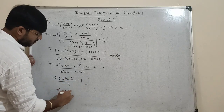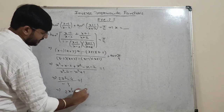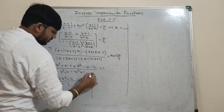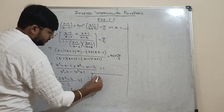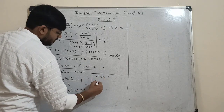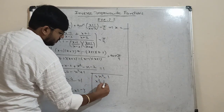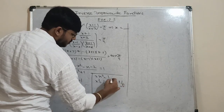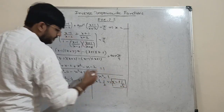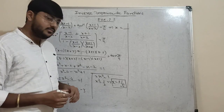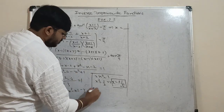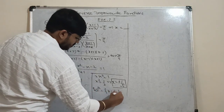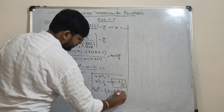Therefore 2x²-4 = -3, so 2x² = 1, x² = 1/2, and x = ±1/√2. The solution is x = ±1/√2.